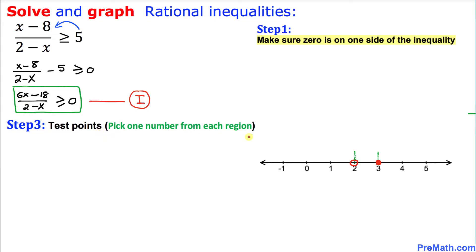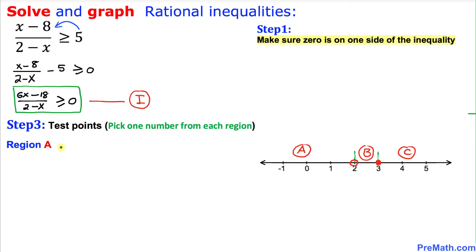In our next step we do the test points. These two critical points create three regions: the first region is to the left of 2, which I'll call Region A; the region between 2 and 3 is Region B; and the region to the right of 3 is Region C. We will pick one point from each region.